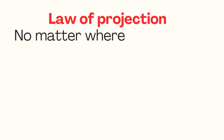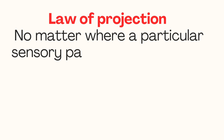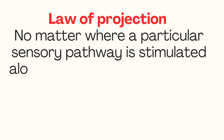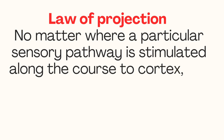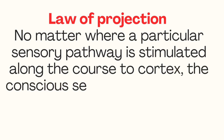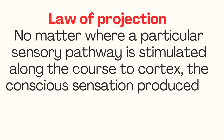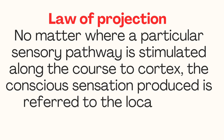The second is called the law of projection, which states that no matter where a particular sensory pathway is stimulated along the course to the cortex, the conscious sensation produced is referred to the location of the receptor. The best example is the phantom limb.